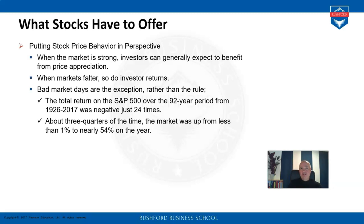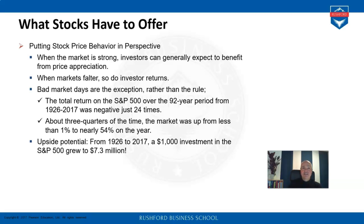Over the period of 1926 to 2017, the S&P 500 had only 24 years of negative returns — meaning from the beginning to the end of the year there was a negative return. Three-quarters of the time the market had been positive. If you had invested $1,000 into the S&P 500 in 1926 and kept it until 2017, your investment would be worth $7.3 million dollars.